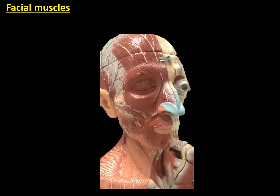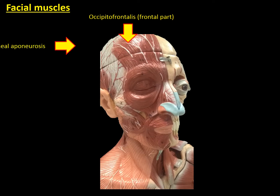In this anatomical model we can observe the facial muscles. Starting from the superior part, we can observe the occipital frontalis muscle. We are seeing the frontal belly, which is linked with its aponeurosis.